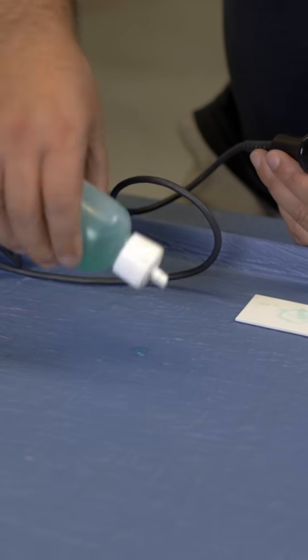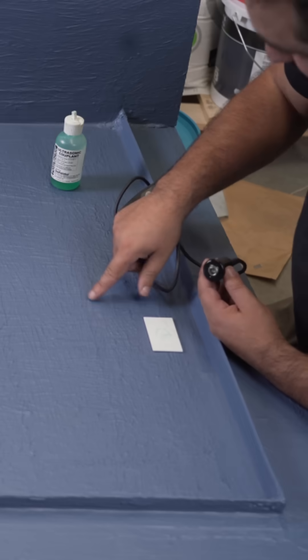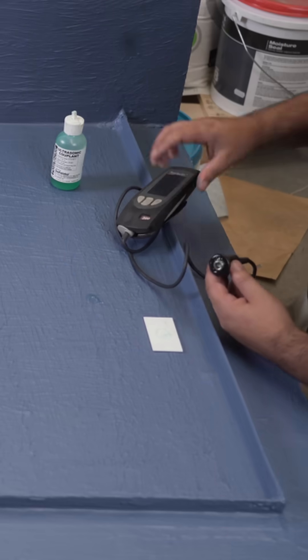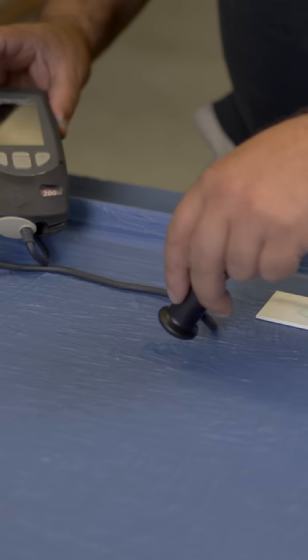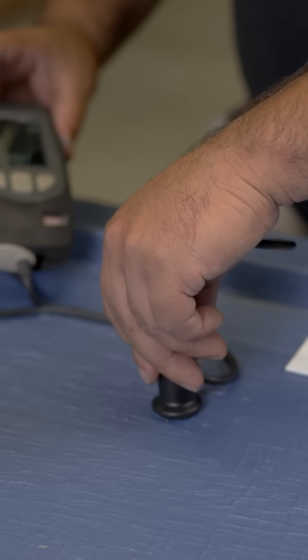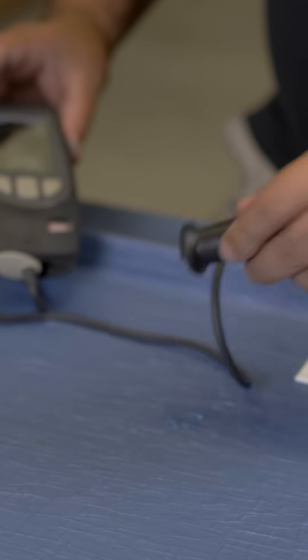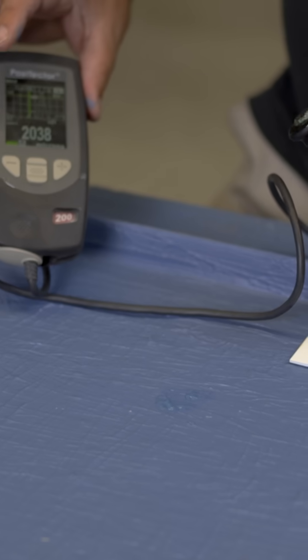Here we have the Positector, and this type of device is what would be used to measure your dry film thickness by an inspector. This one here has exceeded what the minimum requirements are.